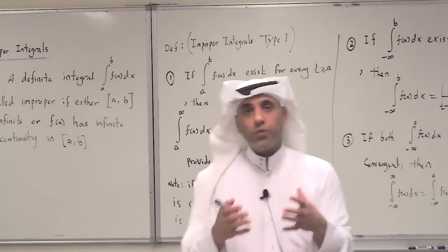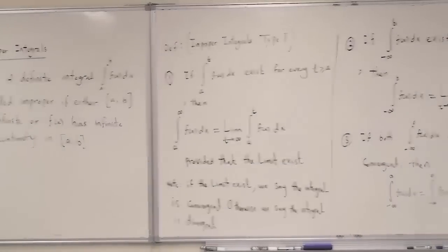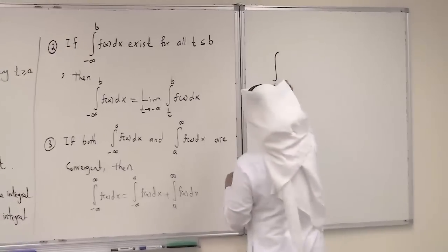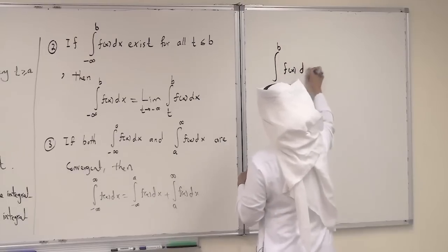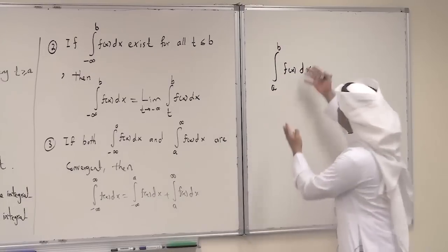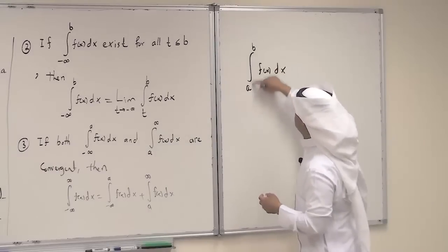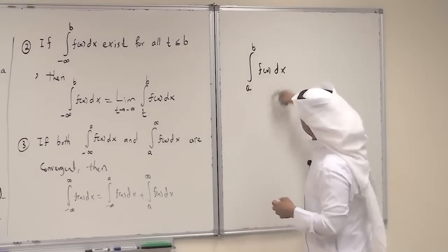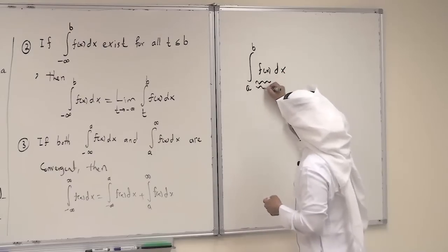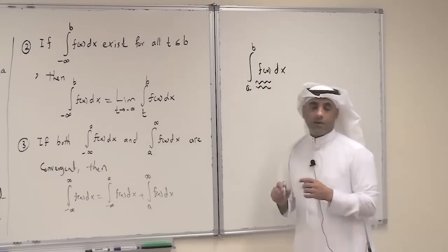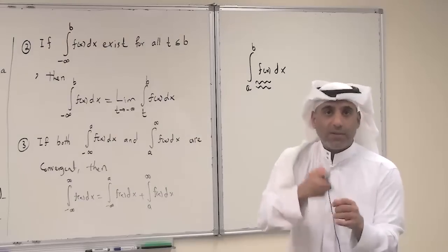Before we define what we call a definite integral, we said a definite integral is an integral of the form from a to b of f(x) dx. Now, all problems we treated before have finite numbers for the interval given, and we assume that the function here is continuous. Why? Because we need to use the tool called the fundamental theorem of calculus to calculate.